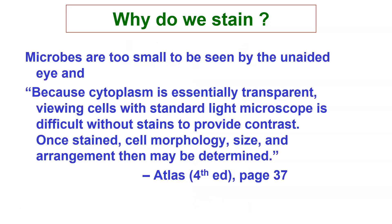The atlas says microbes are too small to be seen by the unaided eye, and because the cytoplasm is essentially transparent, viewing cells with a standard light microscope is difficult without stains to provide contrast. Once stained, we can look at things like cell morphology, size, arrangement, and other features.